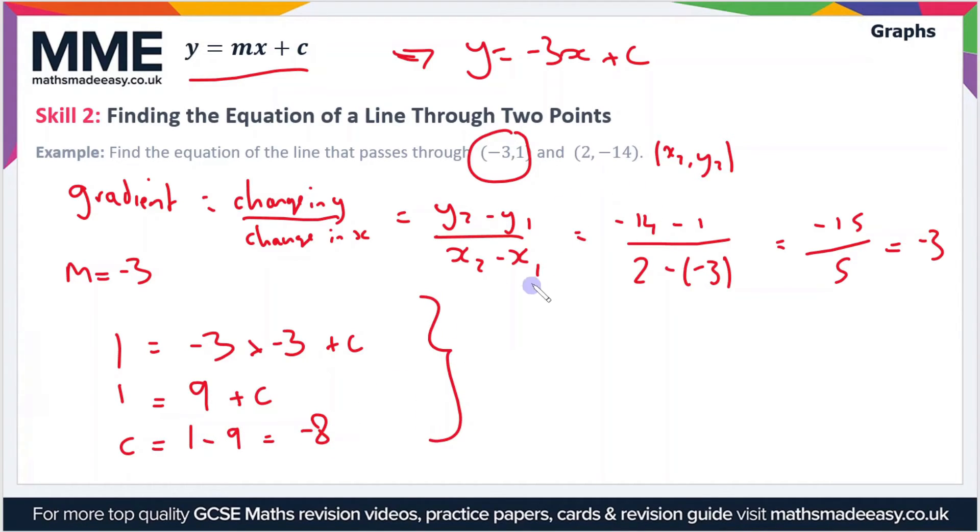If we put all this together in our expression at the top, we can see that the final equation is y equals minus 3x minus 8.